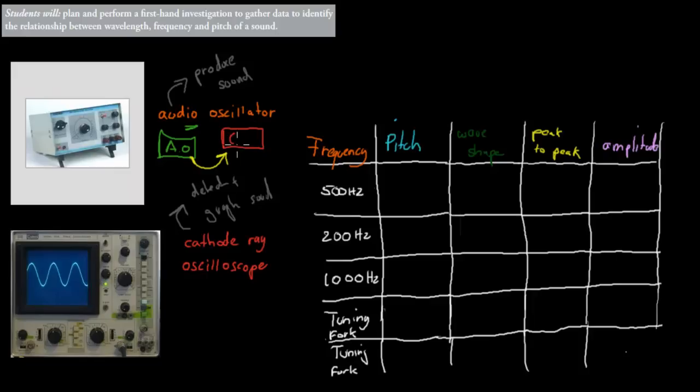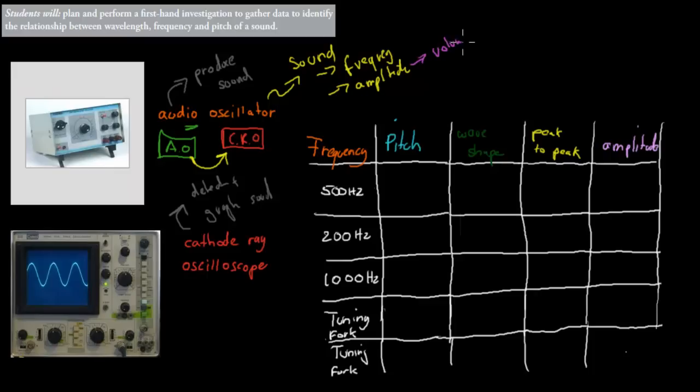With the audio oscillator we can produce sound of different frequency and different amplitude. We can change amplitude — remember amplitude is volume. And frequency was connected to pitch. So we could produce three different types of sounds: one at 500 Hz, another at 200 Hz, and another at 1000 Hz.